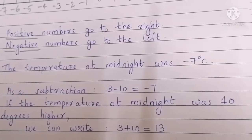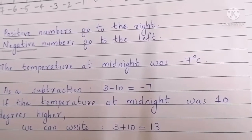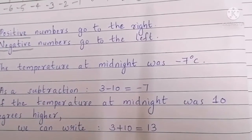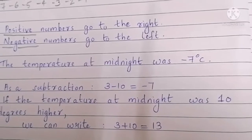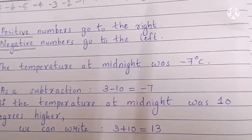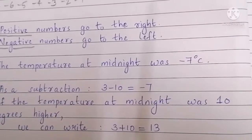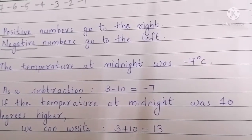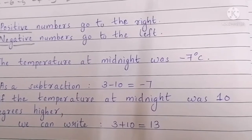In another case, if the temperature at midnight was 10 degrees higher, we can write 3 plus 10 is equal to 13. When the temperature increases, we write it as addition.